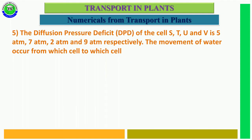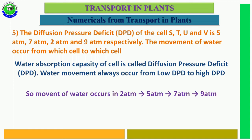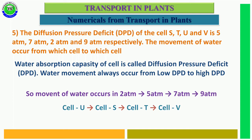Question number 5. The diffusion pressure deficit (DPD) of cells S, T, U, and V is 5, 7, 2, and 9 atmospheres respectively. In which direction does water move? Water absorbing capacity of a cell is called DPD, and water always moves from low DPD to high DPD: from 2 to 5, 5 to 7, 7 to 9 — that is, from cell U to S, S to T, and T to V.